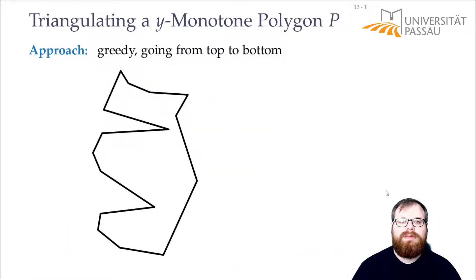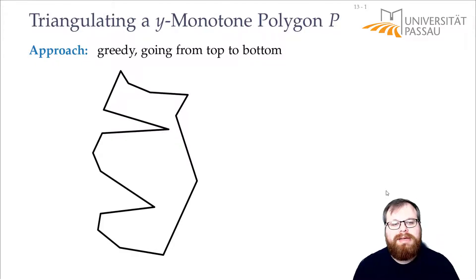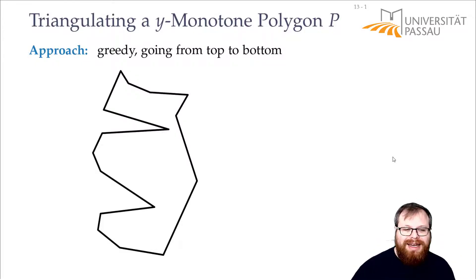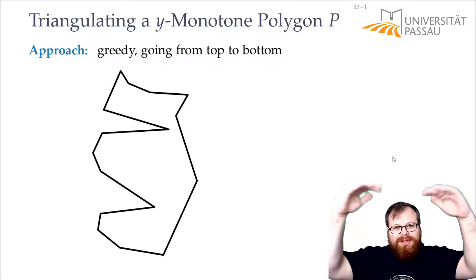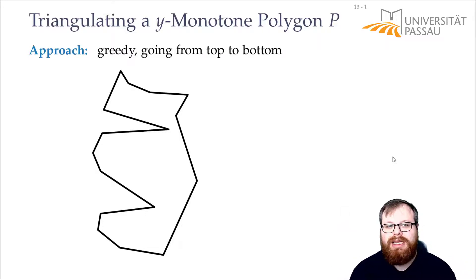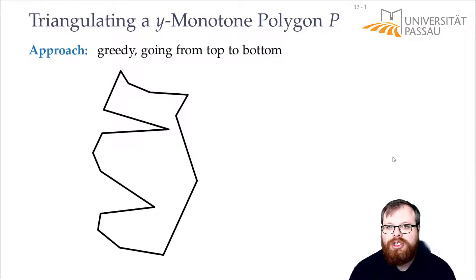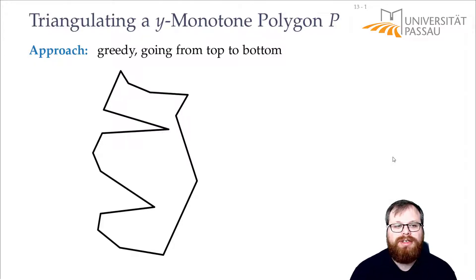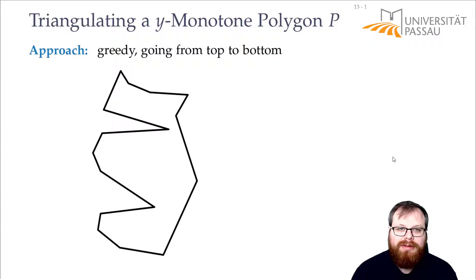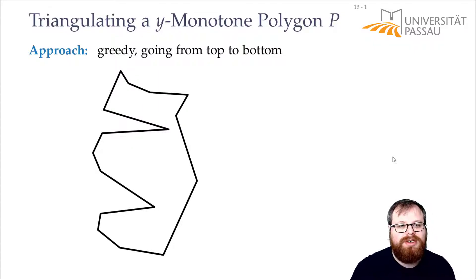Let's have a look at a y-monotone polygon. We want to do something greedy — go from top to bottom and collect vertices, and greedily add an edge whenever it is possible. That's basically what we want to do. It's a very simple algorithm, though we have to figure out the details.